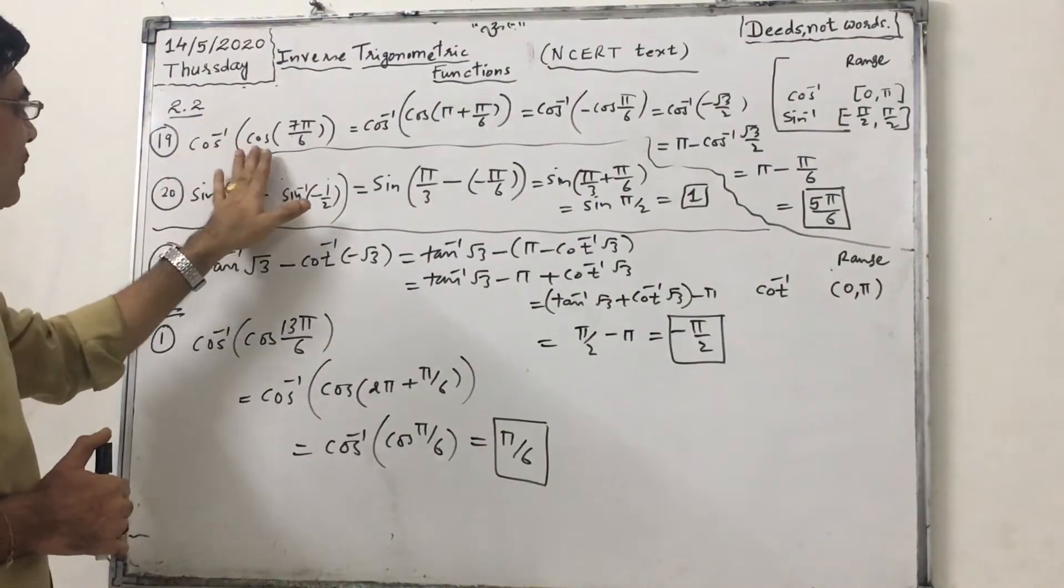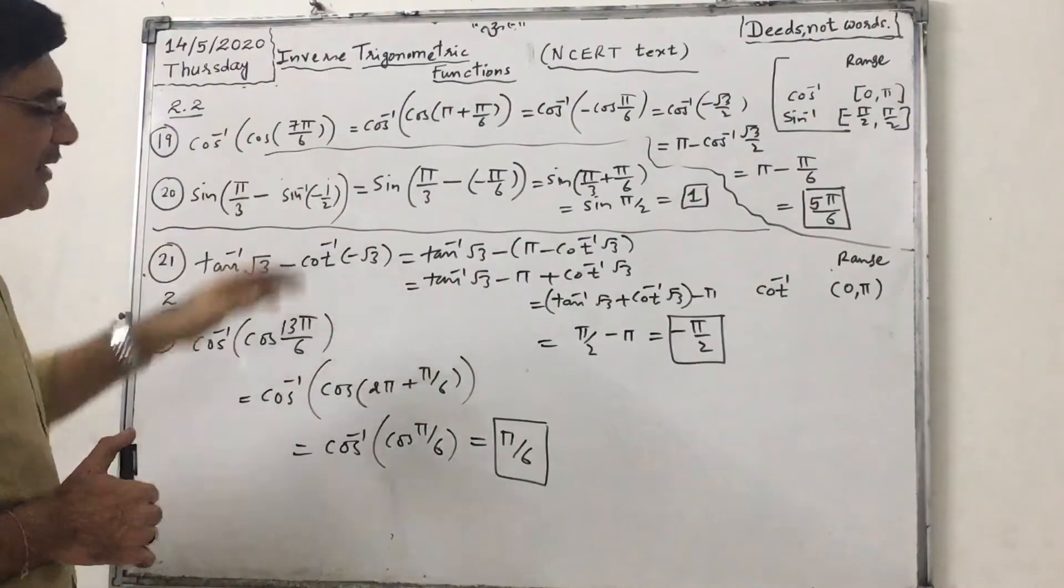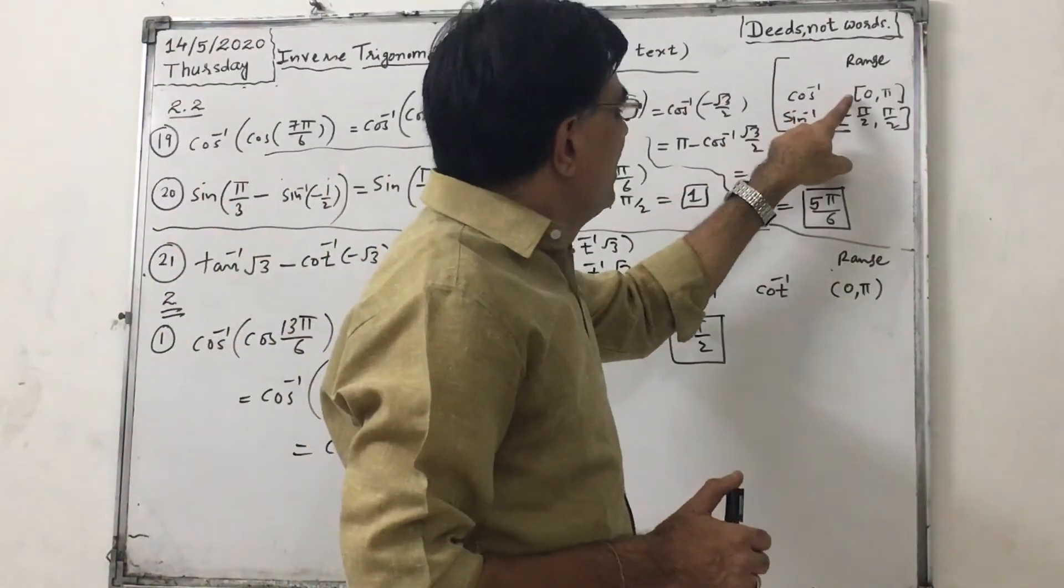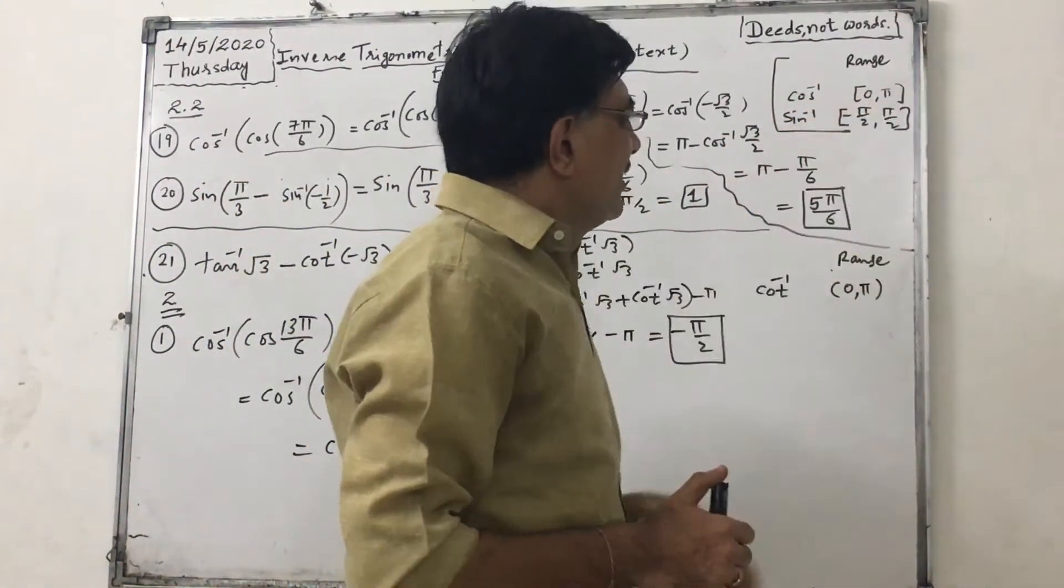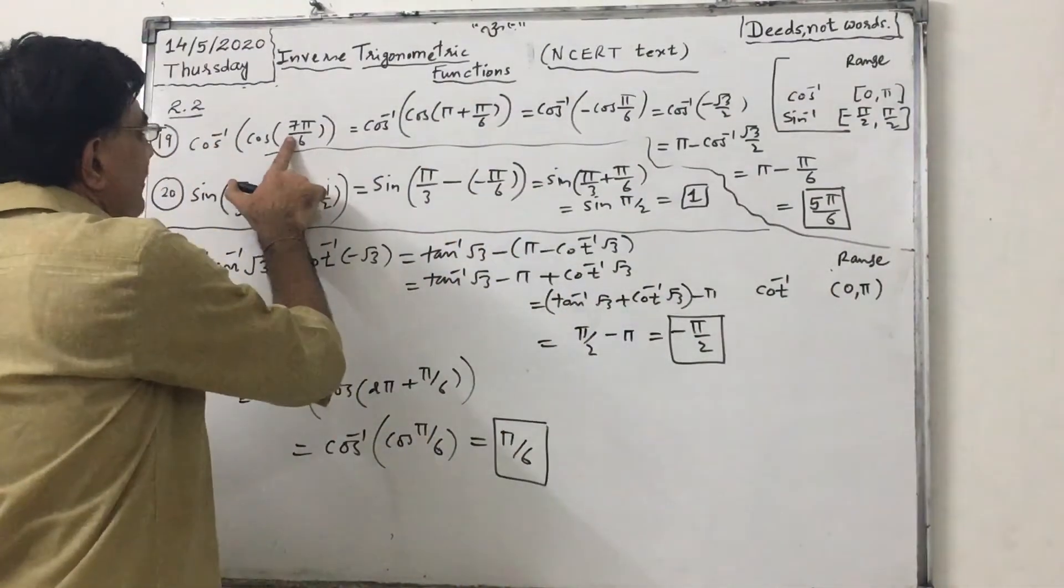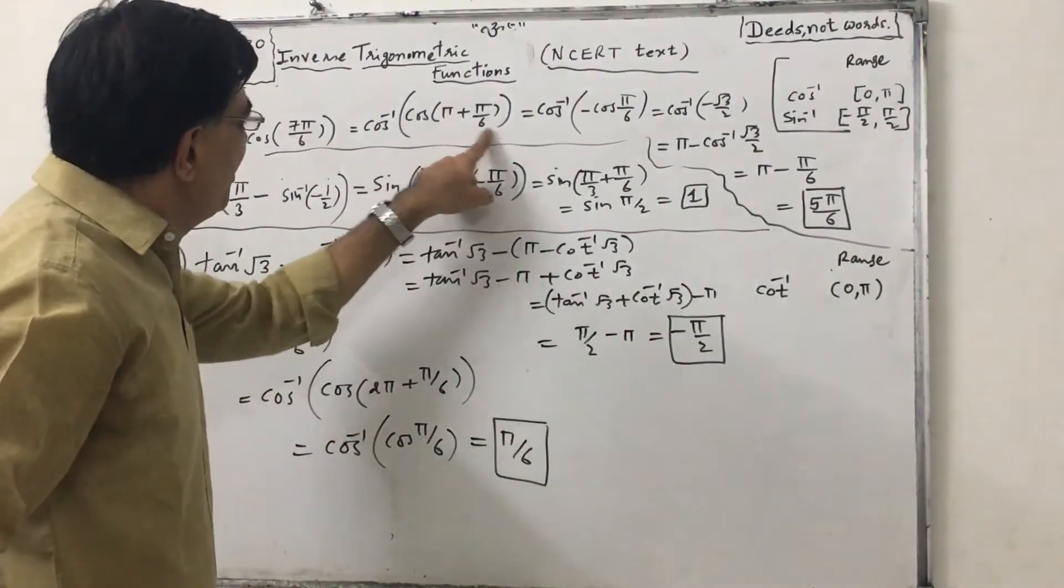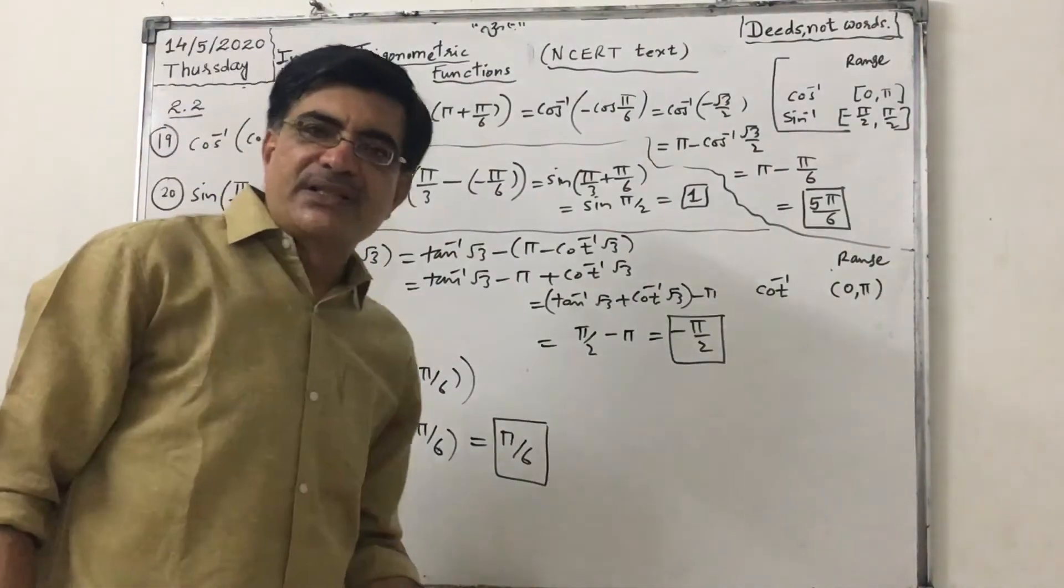cos inverse of cos 7π by 6. Now 7π by 6 is not in range of cos inverse because range of cos inverse is closed interval 0 to π. So we can write this 7π by 6 as cos of π plus π by 6. This is third quadrant, we know that in third quadrant cos is negative.